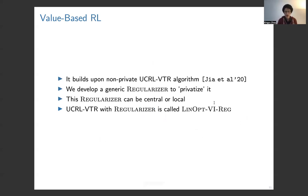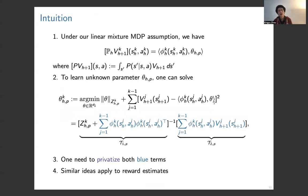Now we come to the main results. First, we consider value-based algorithms. It builds upon the non-private one, which is UCRL-VTR in Jin's work. We derive a geometric regularizer to privatize it. This regularizer can be local and central. UCRL with regularizer is called LINOPT-RIC. Some intuition: Under our linear mixture MDP model, we have this kind of relationship, which is key. On the left-hand side is expected value, and on the right-hand side is inner product. This reminds us to use a linear bandit type of approach. We can use regularized least squares regression to estimate the unknown parameter θ. The key change is that we have to privatize the blue terms so that it will not leak information on the states, because the blue term contains the information of states. Similarly, we can use the same idea to privatize the rewards.